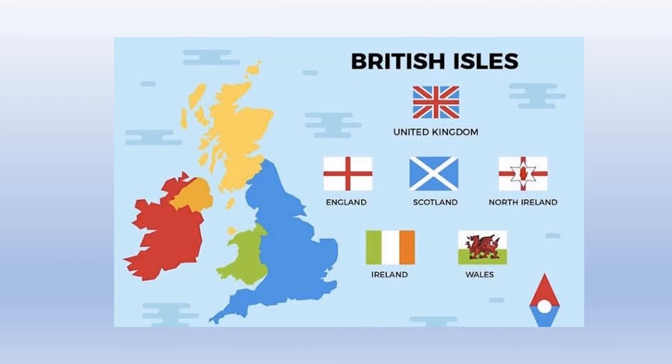Now you know what the British Isles are. You also have to add Jersey and Guernsey, which are quite small and not on the map. Here you've got all the flags, and the one at the top, which is blue, red and white, is the flag of the United Kingdom called the Union Jack, because it's supposed to represent a union of all the countries. So it was easy, wasn't it?